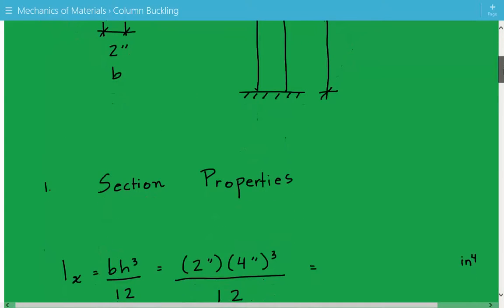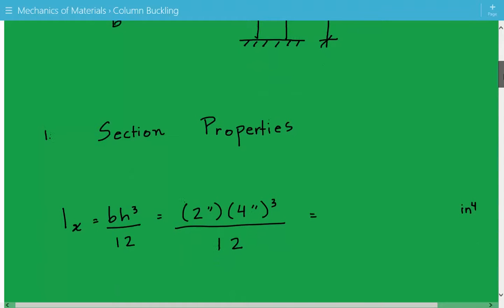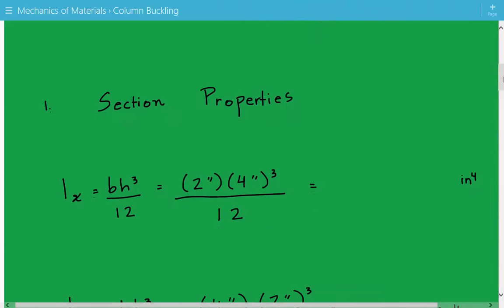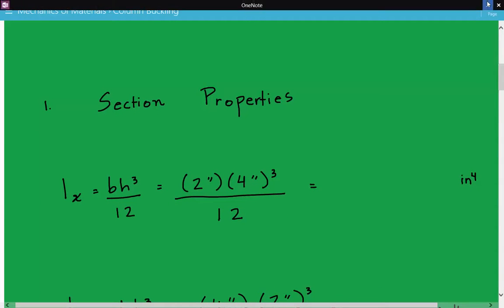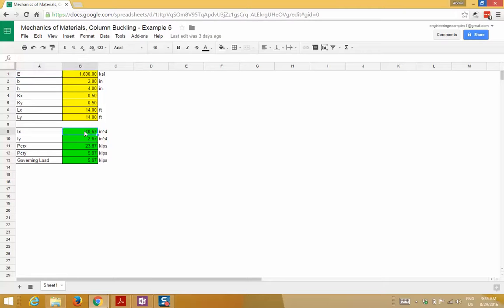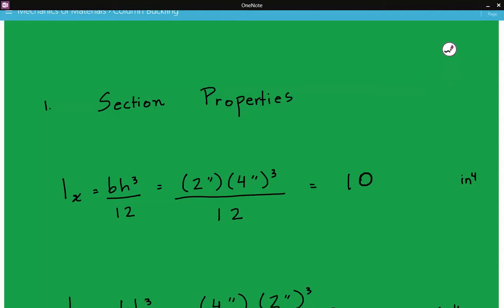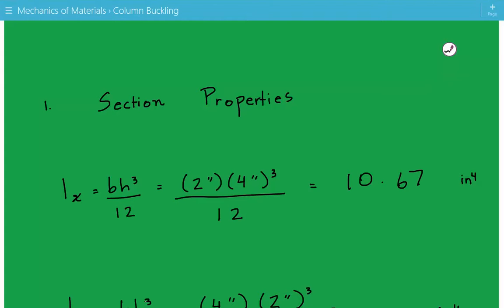First thing we're going to do is get the section properties. The moment of inertia about the x axis is equal to bh³ over 12, and this comes out to be 10.67 inches to the fourth power. This spreadsheet is available at our website at engineeringexamples.net, where you can get this spreadsheet as well as many other spreadsheets.